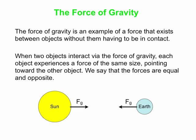Note that the force that one object exerts on the other always points back to the object exerting the force. So the force the Earth exerts on the Sun points back to the Earth. The force the Sun exerts on the Earth points back to the Sun, toward the object exerting the force.